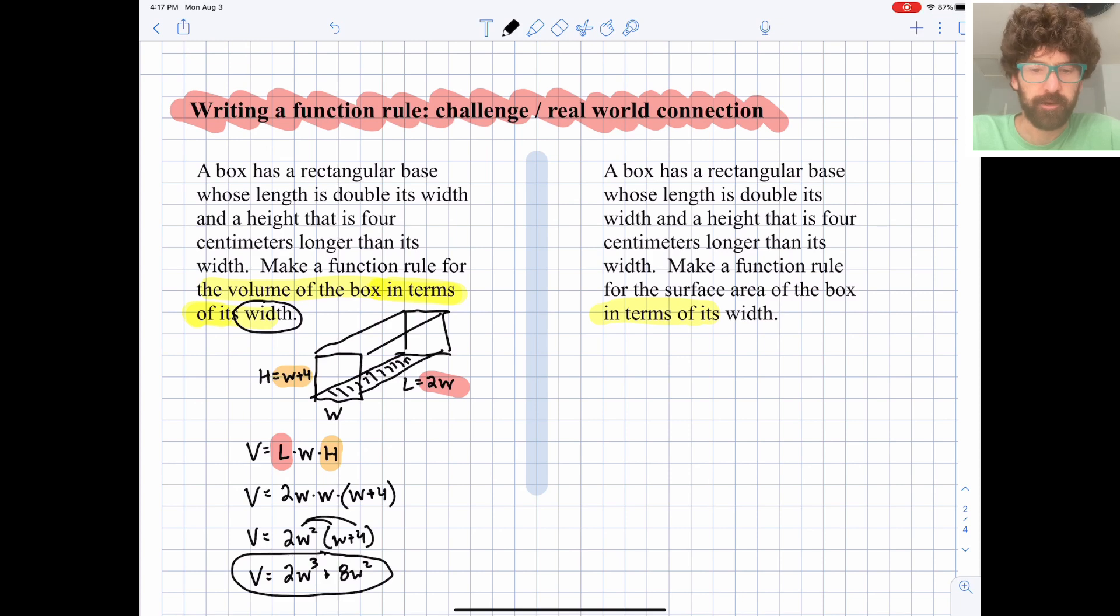And here's actually a reason why this might be useful in the real world. Say you had some boxes that followed these rules in terms of length is double the height, or length is double the width, and height is width plus 4. But you had a whole lot of varying sizes. Okay, even though they all followed those rules, the initial width could be of many varying sizes. And all you need to do is just plug in your width, and you would be able to get your volume.